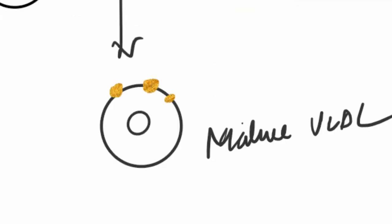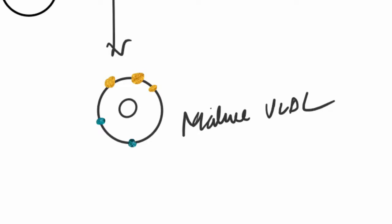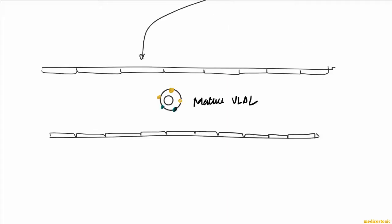Now this mature VLDL molecule then enters the capillaries. We talked about the amphipathic shell and the central core. This amphipathic shell consists of phospholipids and free cholesterol.